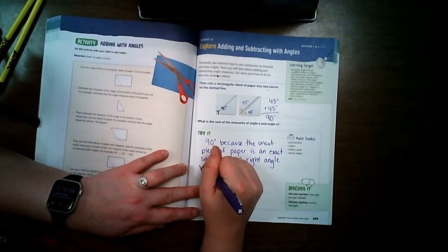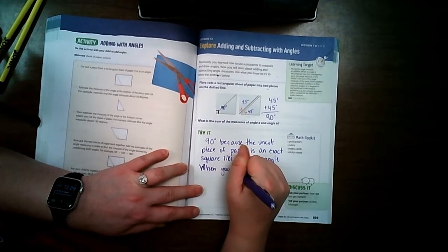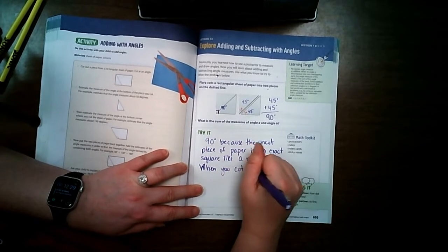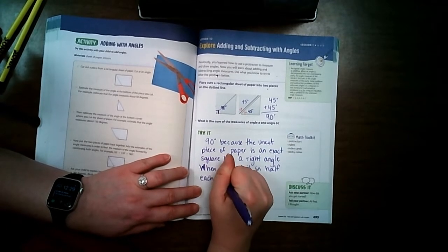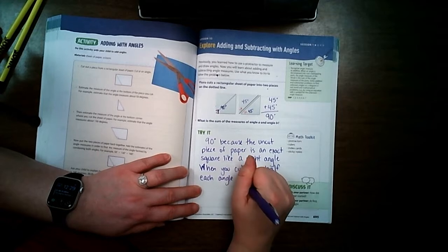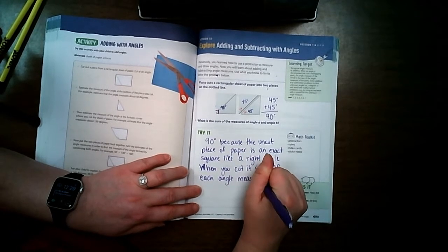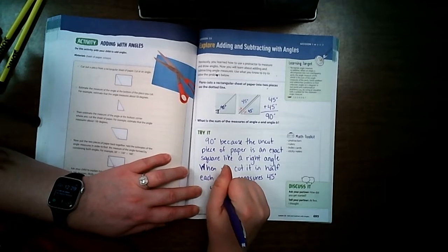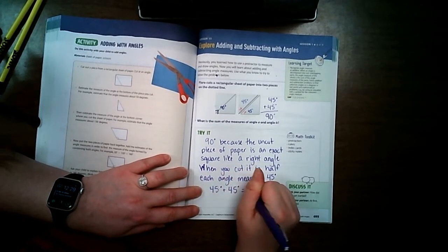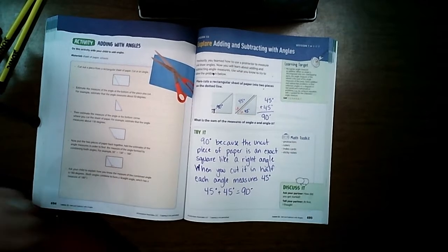When you cut it in half, each angle measures 45 degrees. 45 degrees plus 45 degrees equals 90 degrees.